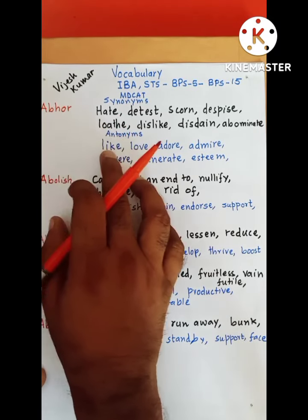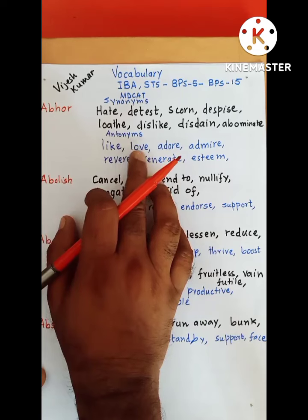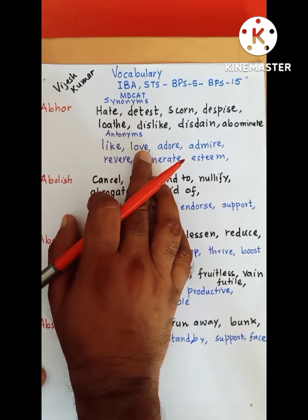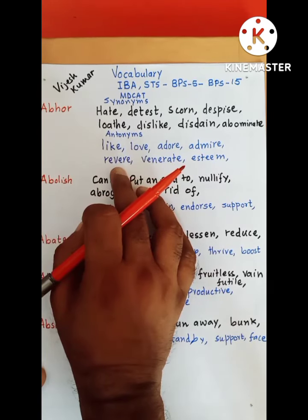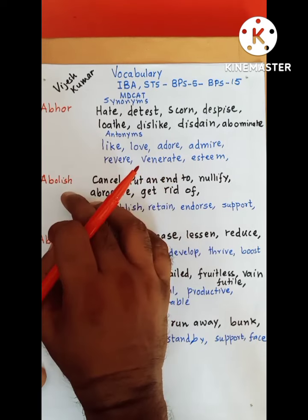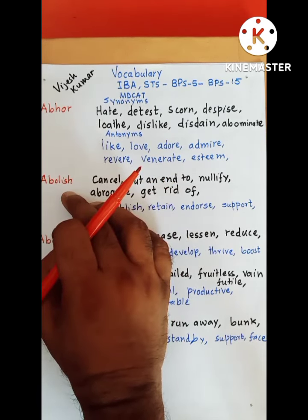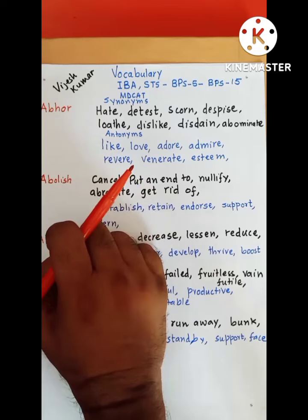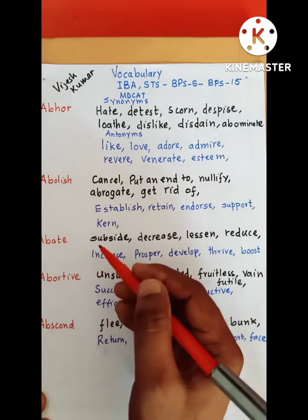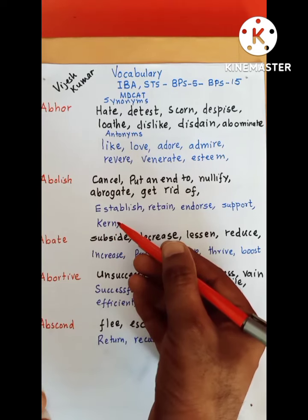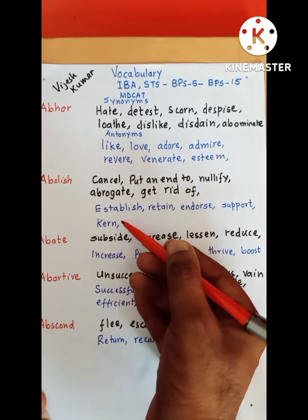And its antonyms are like love, adore, admire, revere, venerate, esteem. Abolish means cancel, put an end to, nullify, abrogate, get rid of, stop something. And its antonyms are establish, retain, endorse, support, sustain.